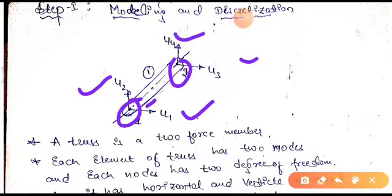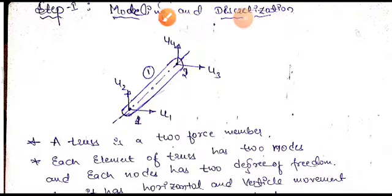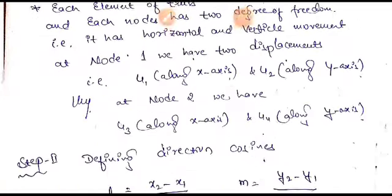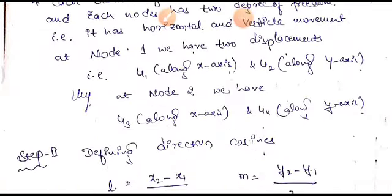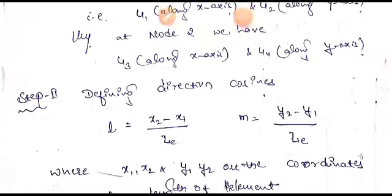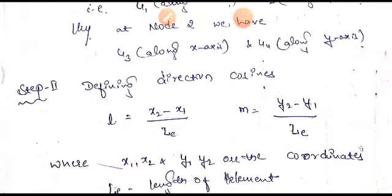In modeling, we need to define the number of nodes, number of displacements, and number of forces. As we know, the truss is a two-force member, so each node has two degrees of freedom.